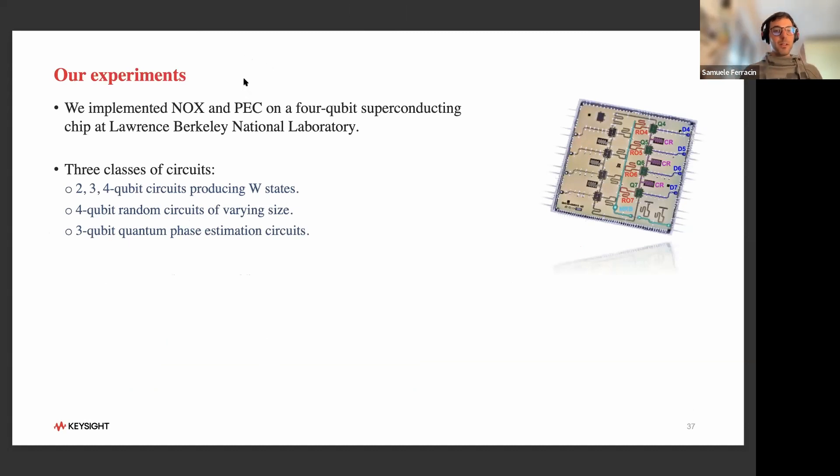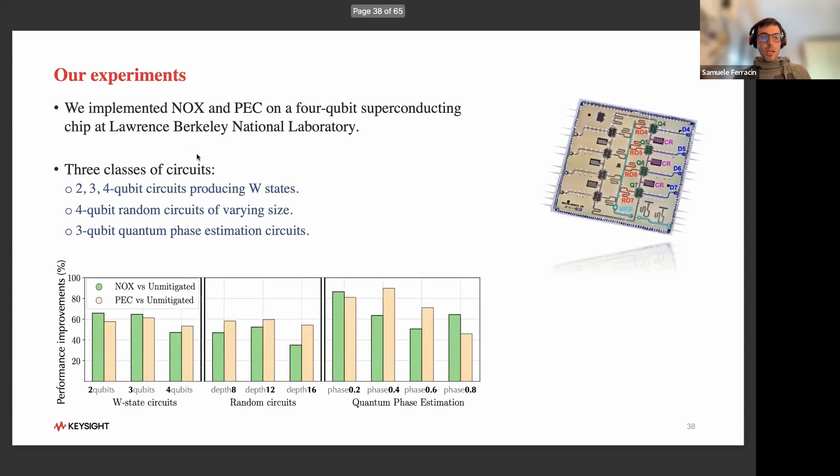Over to the last part of my talk, the experimental results. We implemented NOX and PEC on a four-qubit superconducting chip at LBNL. Actually, it was an eight-qubit chip, but the four gray ones you see were not available at the time of the experiment. We were very sad because we thought we could improve the performance of an eight-qubit chip, but we used only four. We implemented our protocols on classes of circuits and saw significant performance improvements for all circuits we ran, ranging from 36% to about 82%. Based on these results, we could conclude that NOX and PEC are reliable and practical solutions for the NISQ era.